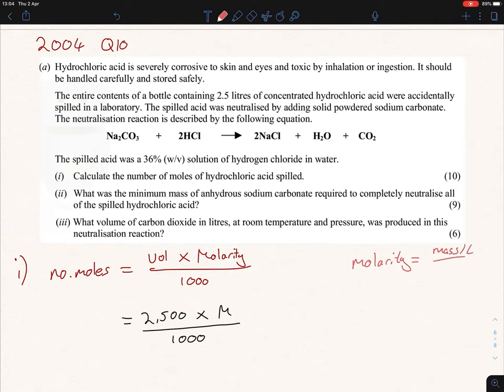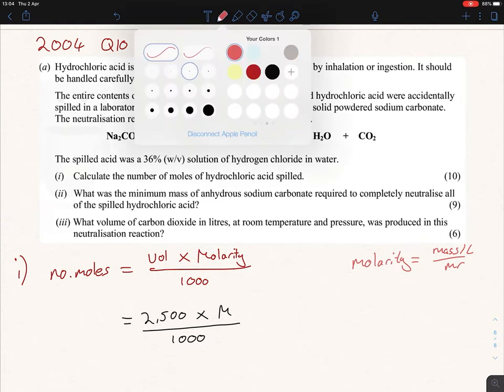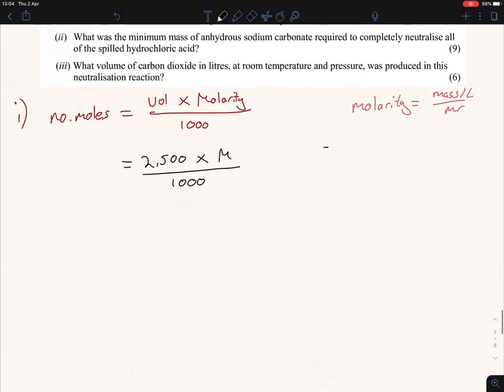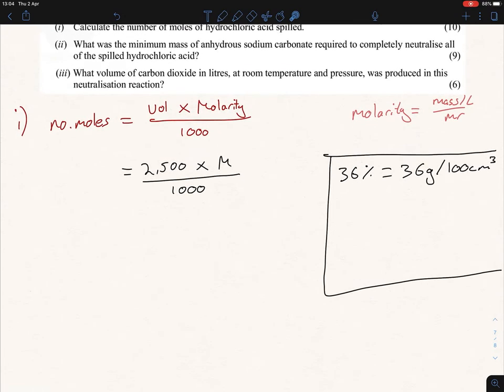Now we're not given anything here except that we're told it is 36 percent weight per volume. As soon as I see 36 percent, I can assume that this 36 percent equals 36 grams per 100 centimeters cubed. We're dealing with weight per volume. Now we need to find this in terms of mass per liter. So we have mass per 100 centimeters cubed, we need to convert that. 100 goes into a liter 10 times, so if I multiply 36 grams by 10 I'll get 360 grams, and therefore we'll have this per liter, which is what we want.